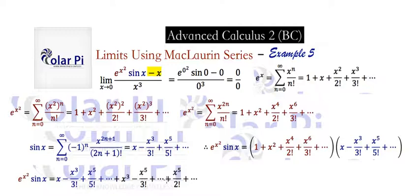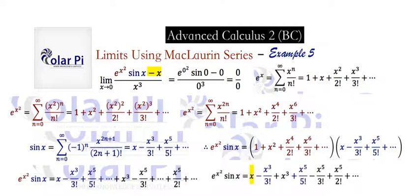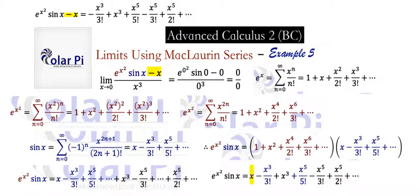We have to divide by x cubed, so anything x to the fifth or beyond is too much. Notice our numerator is e to the x squared times sine x minus x — not just e to the x squared times sine x. Since e to the x squared times sine x has this Maclaurin series, I intentionally highlighted the x on the right side of the equal sign because we're going to subtract x from both sides of this equation. So to get the Maclaurin series for the numerator — e to the x squared times sine x minus x — we subtract x from both sides, and the right side of the equal sign becomes the Maclaurin series for e to the x squared times sine x minus x.